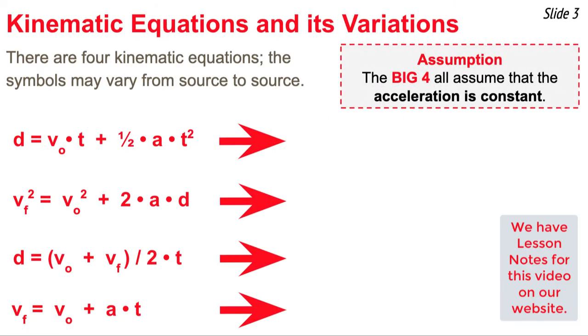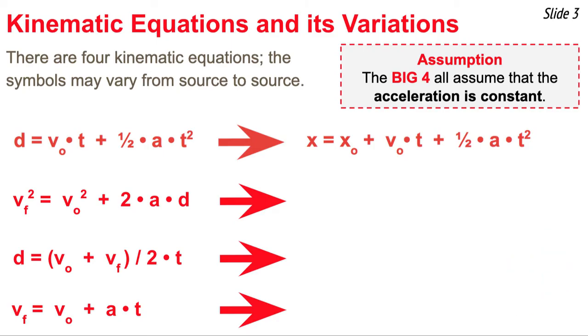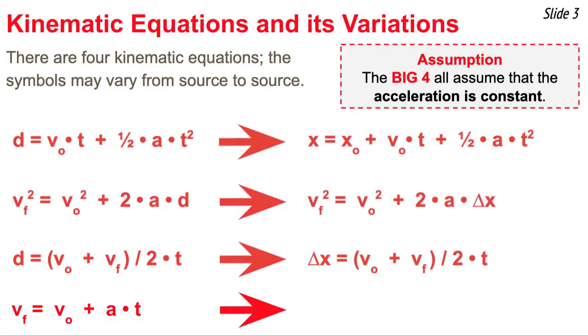In previous videos of this series we've talked about the four kinematic equations. The way that I write them is shown here, but other sources may use different symbols for the variables that I've used. For instance, sometimes displacement or overall change in position is represented by a delta x. The first equation kind of uses that idea and rewrites it as x, the final position, is equal to the original position plus v original times t plus one half at squared. The next two equations are sometimes rewritten as well with delta x in place of d, displacement.